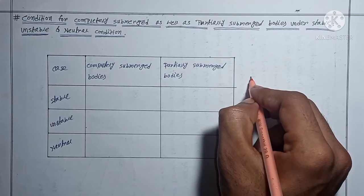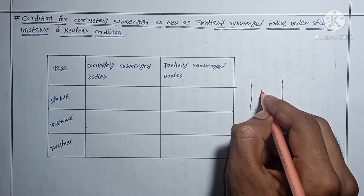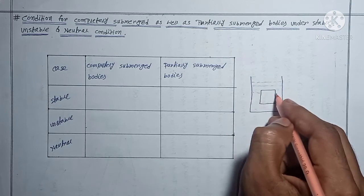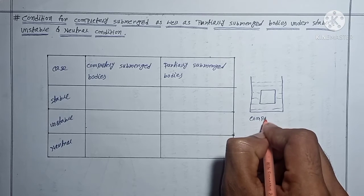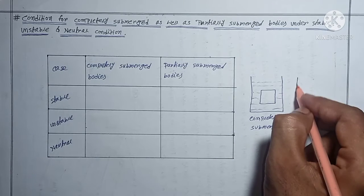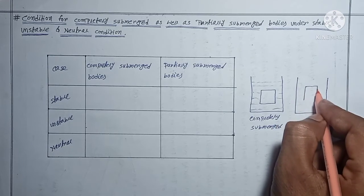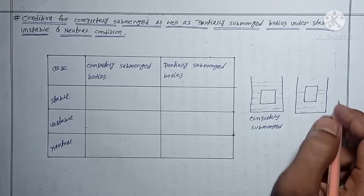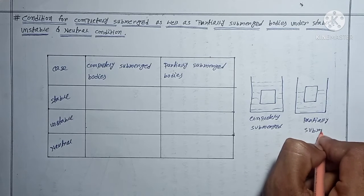Completely submerged bodies means: suppose this is a tank and this is a body, and the liquid is above the body — that is the condition of completely submerged. For partially submerged, suppose this is a tank and the liquid level does not cover the top of the body — the liquid is not above the body. That is the case of partially submerged.